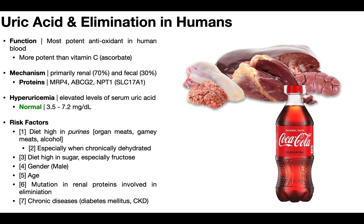Number three, a diet high in sugar — especially fructose, such as high fructose corn syrup — predisposes you to developing hyperuricemia. Simply being male and being older also increase your risk. Having mutations in renal proteins involved in tubular secretion of uric acid also increases the likelihood. Chronic diseases such as diabetes mellitus and chronic kidney disease both cause kidney damage, impairing the ability to eliminate uric acid, further predisposing someone to hyperuricemia.